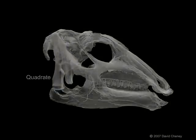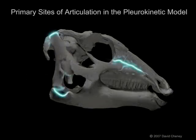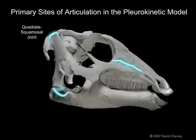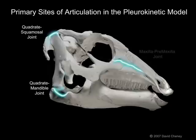These mobile components articulate at three primary sites in the hadrosauroid skull. The quadrate rotates at the quadrate squamosal joint, the dentary pre-dentary unit rotates at the quadrate mandible joint, and the maxilla jugal unit rotates at the maxilla pre-maxilla joint.